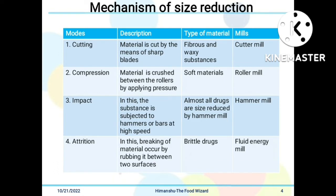The mill used for cutting is the cutter mill. The second mode is compression: the material is crushed between rollers by applying pressure. The type of material suitable for compression is soft materials, and the mill used for compression is the roller mill.